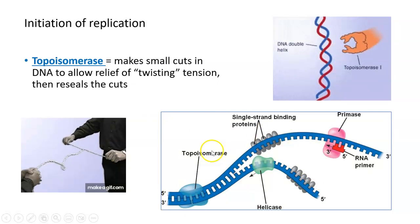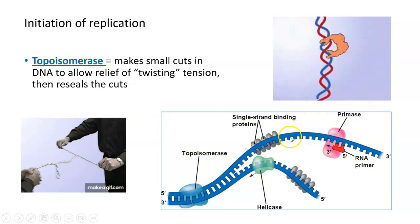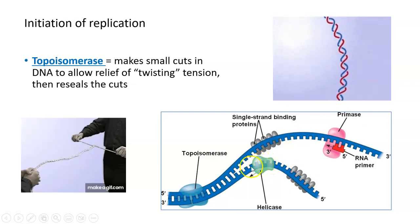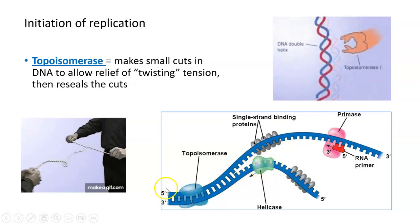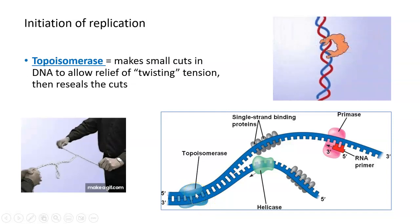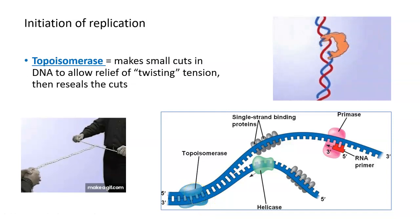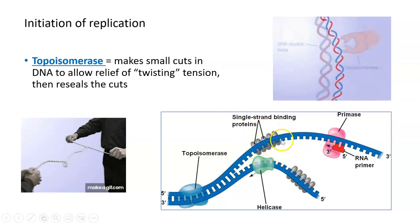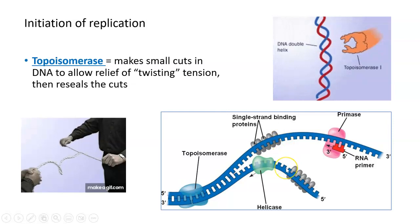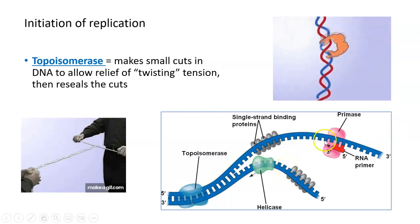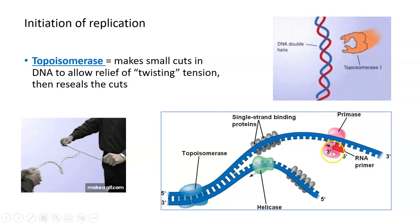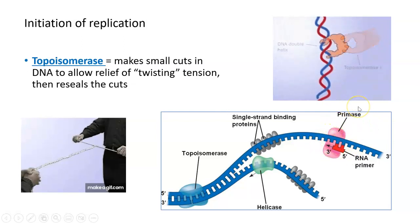Here you can see all of these players together at one replication fork: DNA helicase that's able to unwind and unzip the DNA, topoisomerase slightly ahead of it relieving any tension caused by this unwinding and unzipping, and those single-stranded binding proteins making sure the two separated strands stay separate. There's one other player that we haven't talked about yet, but is absolutely essential to initiating DNA synthesis — an enzyme called DNA primase.